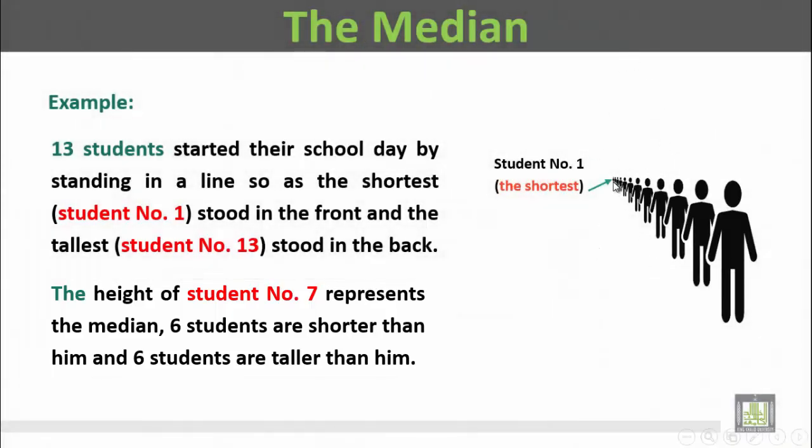This is student number 1, standing in front of the line, and this is student number 7, the median, in the middle of the line, and this is the tallest student, student number 13.